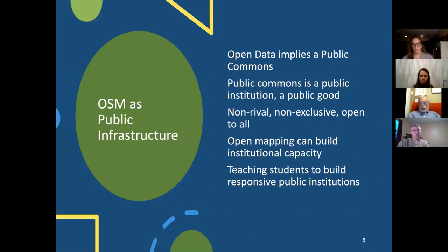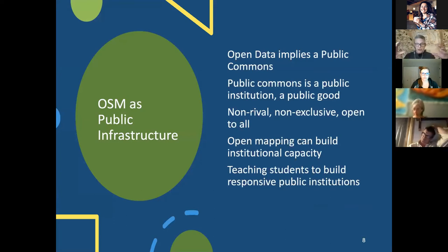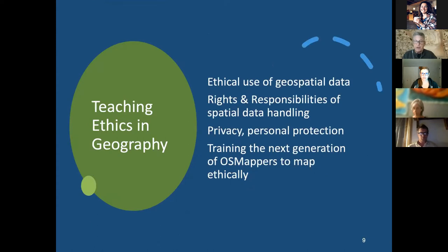OpenStreetMap is public infrastructure — a public data commons — which implies it's a public institution delivering a public good, meaning it's open to all, non-rival, and non-exclusive. This has tremendous impact in terms of building local, regional, and institutional capacity. Embedding this into the classroom helps students find ways that they can actually influence and contribute to those public institutions.